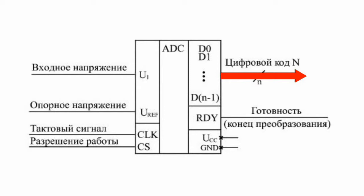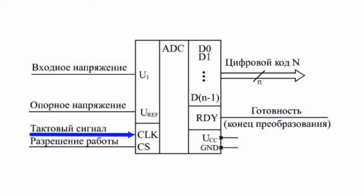When the output code is ready, the end-of-conversion signal RDY is produced. An external device can use this signal to read the output code. Operation of the ADC is managed by the CLK clock signal, which sets the conversion frequency — that is, the issuing frequency of output codes. The marginal clock speed is the second most important parameter of the ADC.